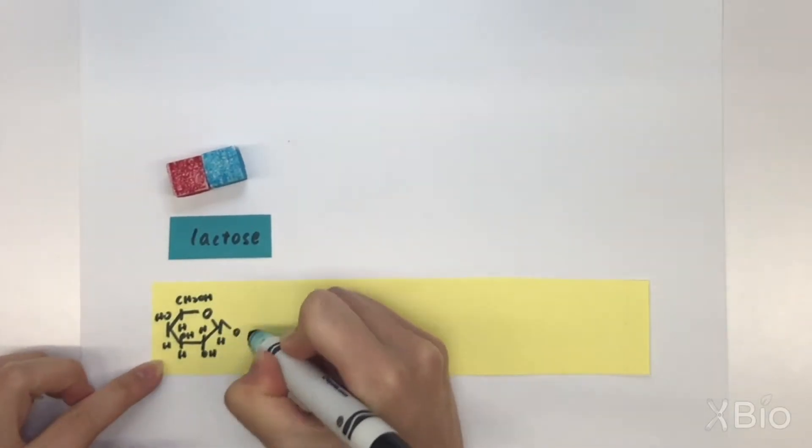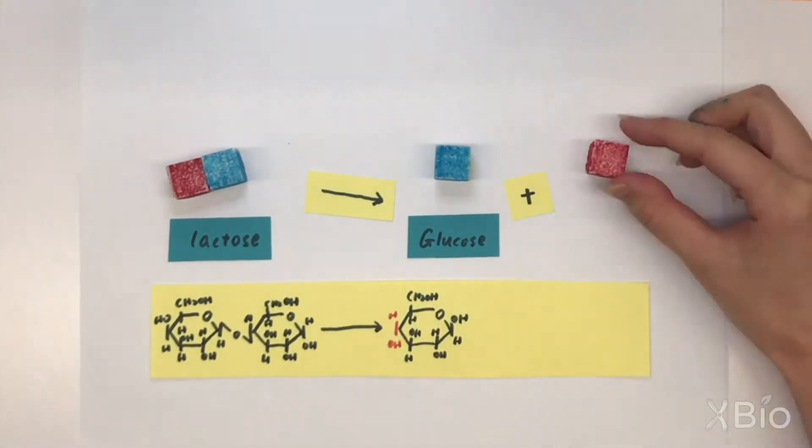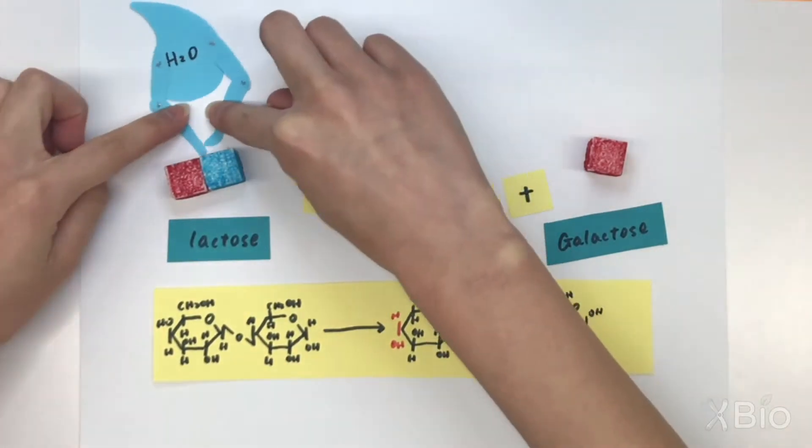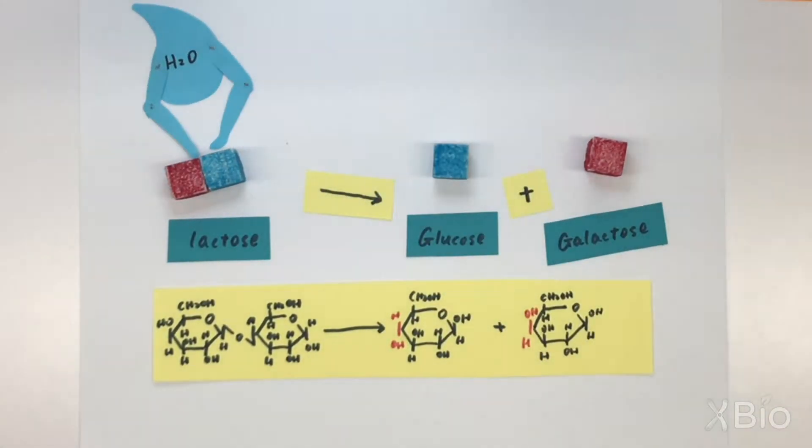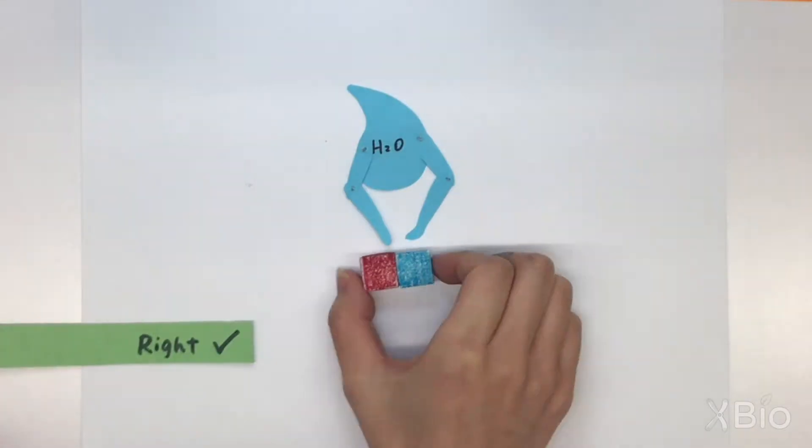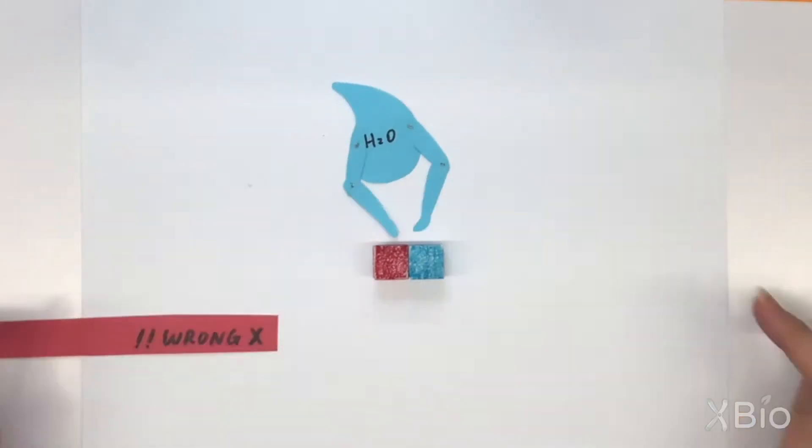Let's take a closer look at the chemical reaction that turns the big sugar lactose into the smaller sugars, glucose and galactose. The addition of water breaks the bond in the middle of the lactose molecule with a chemical reaction called hydrolysis. But the lactose molecule needs to be in just the right position when it encounters the water in order for the reaction to work.